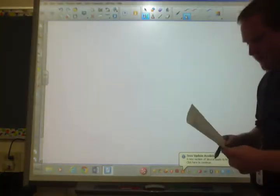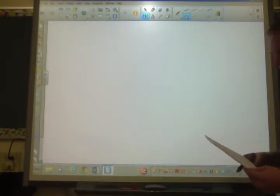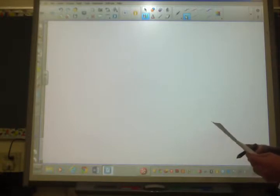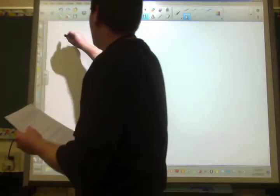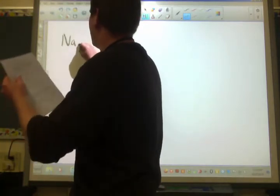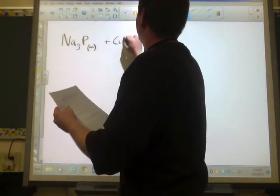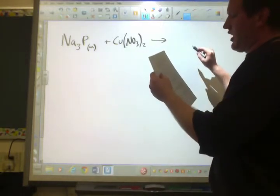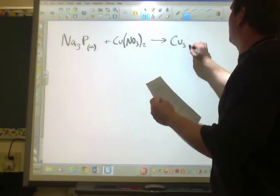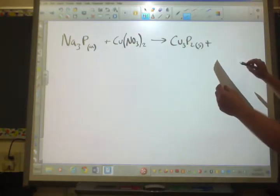So, number one, we have a student mixing aqueous solutions of 1.20 molar sodium phosphide with 0.500 molar copper(II) nitrate to produce solid copper(II) phosphide and aqueous sodium nitrate. Balanced equation including state symbols. Okay, so again, this comes down to naming. You need to be able to name everything.